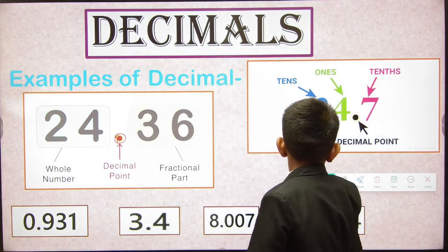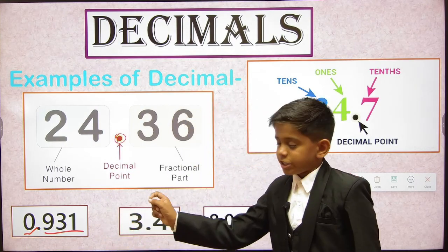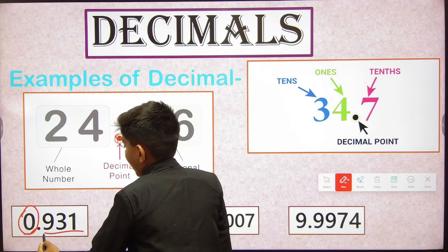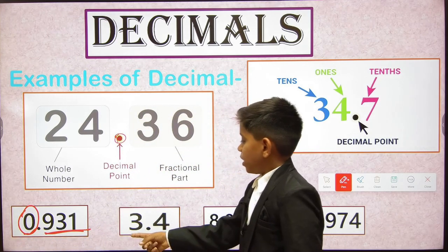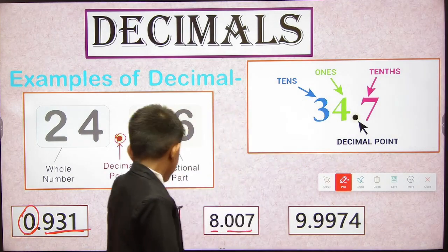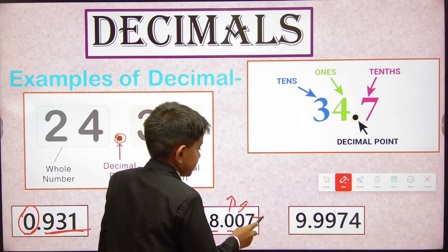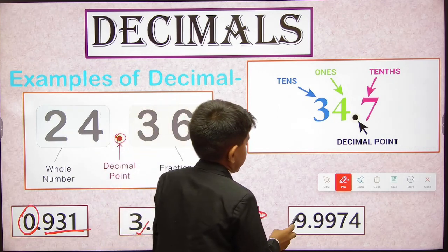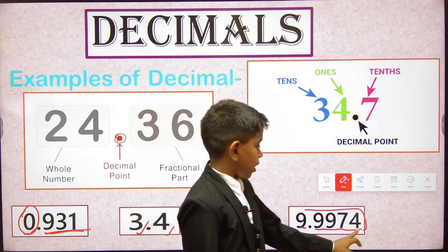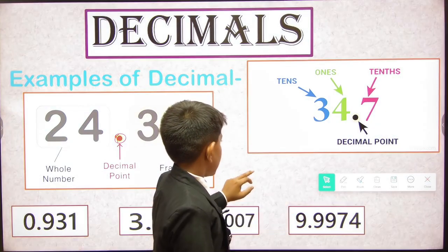Here are some more examples. In 0.931, zero is the whole number and 9, 3, 1 is the fractional part — 9 is in the tenths place, 3 in the hundredths place, and 1 in the thousandths place. In 8.007, the digits after the decimal point also follow tenths, hundredths, thousandths. In 9.9974, 9 is the whole number and 9974 is the fractional part.